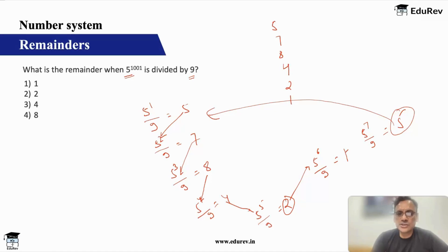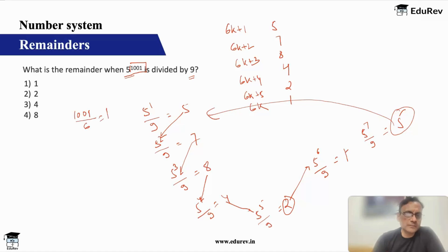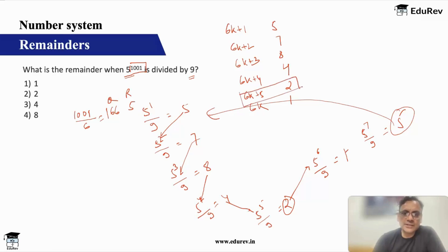So the cyclicity is six, giving remainders five, seven, eight, four, two, one for powers 6k+1, 6k+2, 6k+3, 6k+4, 6k+5, and 6k respectively. We have 1001: when you divide 1001 by six, you get quotient 166 remainder 5. So the number is of the type 6k+5, hence your answer would be two.